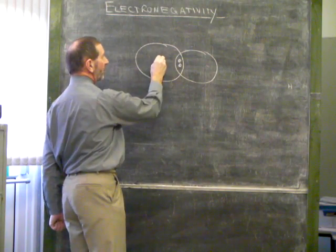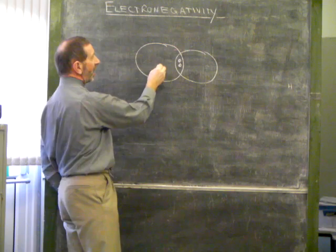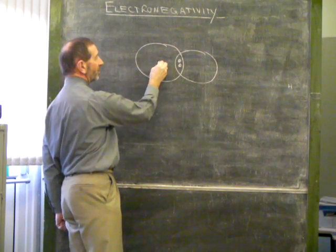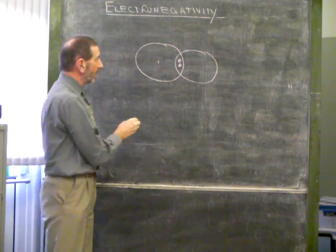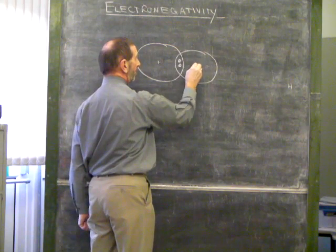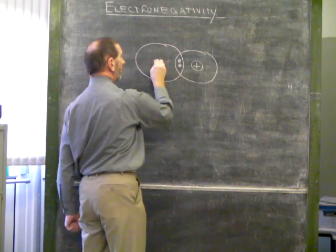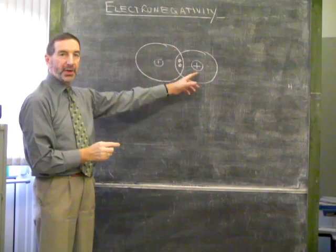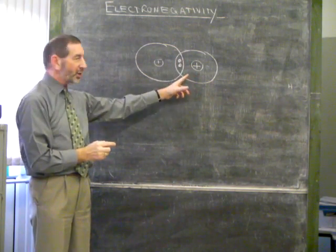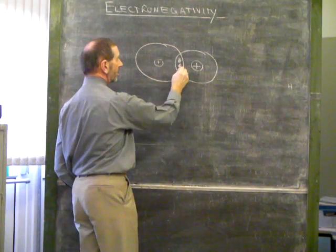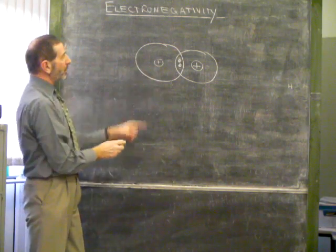Why should an atom attract a pair of electrons? The atom has a positive nucleus. Let's suppose this large atom has a small positive nucleus, a small positive charge. Let's suppose the small atom has a much bigger positive charge. It follows that the small atom with a big charge will have a larger attraction for these negative electrons than the large atom with a small charge.